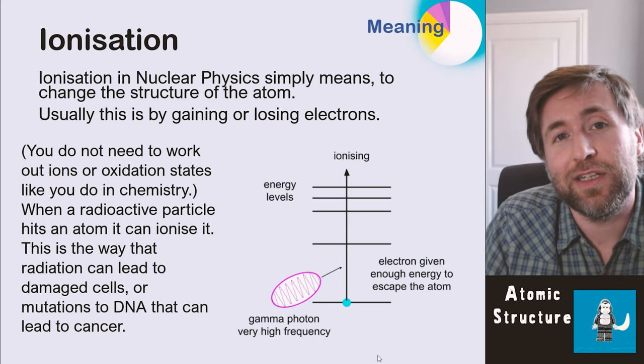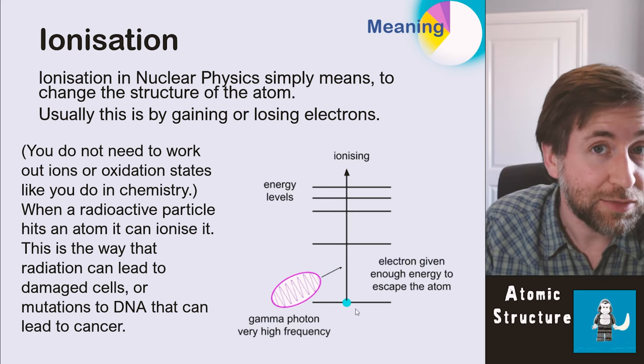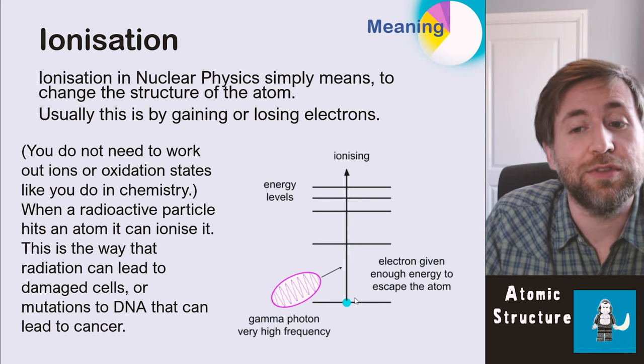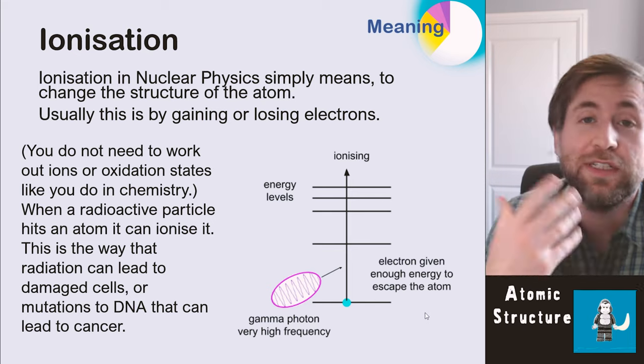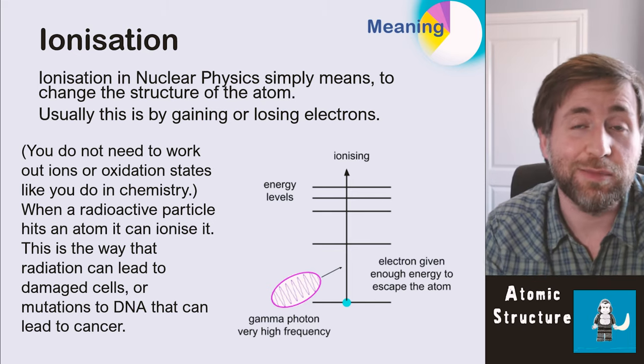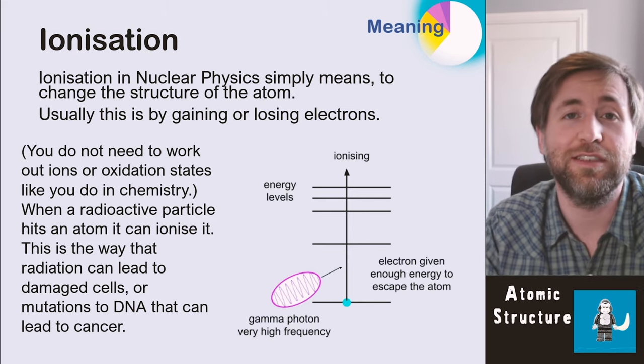When we were talking about ionizing radiation in the electromagnetic spectrum, then this is what was going on. Basically, if the electromagnetic radiation has enough energy or a high enough frequency, in other words, it can give electrons enough energy to actually escape the atoms. So what we say is that can kill cells, or it can lead to DNA mutation, and it can lead to cancer later as well.